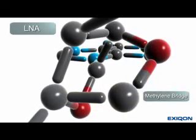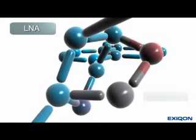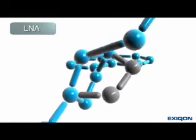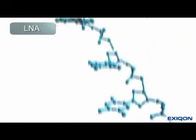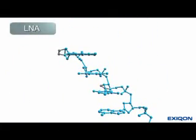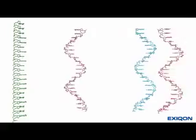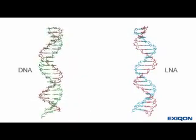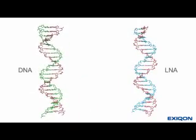This crosslink locks the LNA monomers into the optimal N-conformation. When incorporated into the probe, LNA pre-organizes the probe for binding to its complementary RNA strand. The result is higher affinity binding, and thus a more stable duplex when compared to a standard DNA probe.